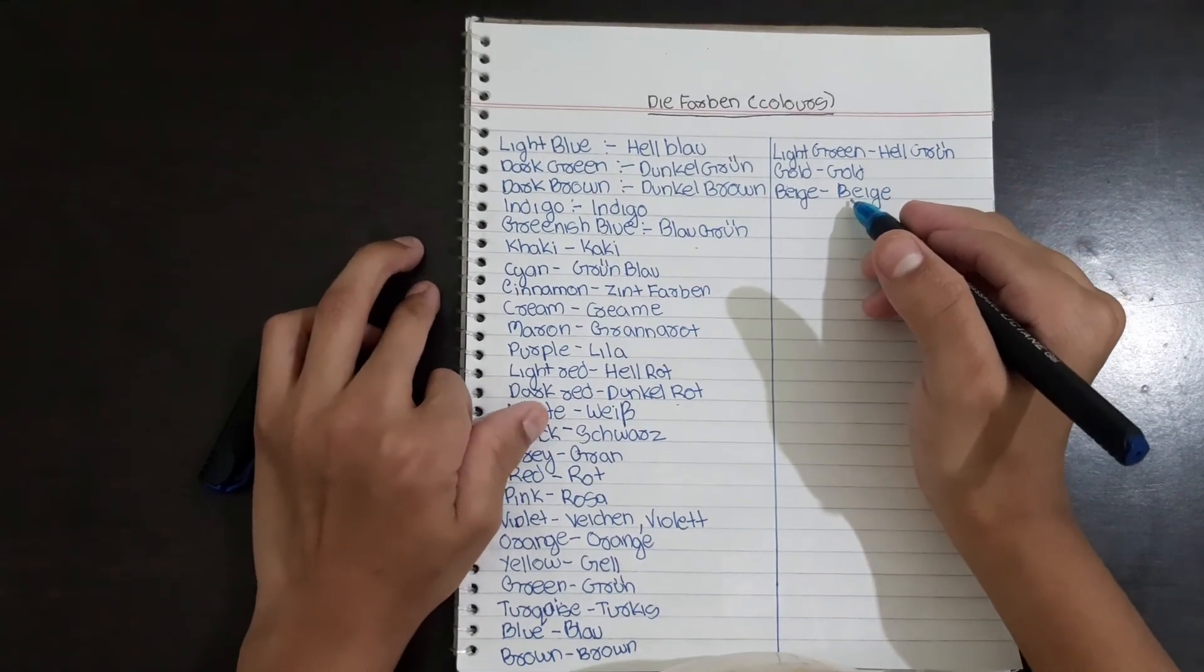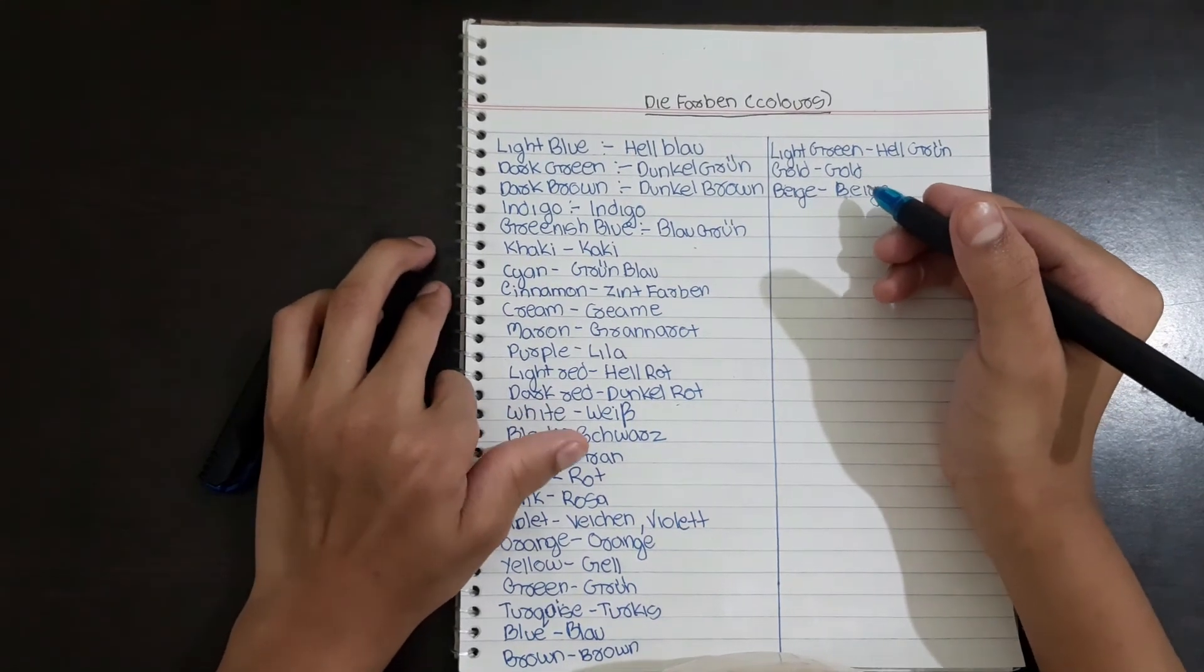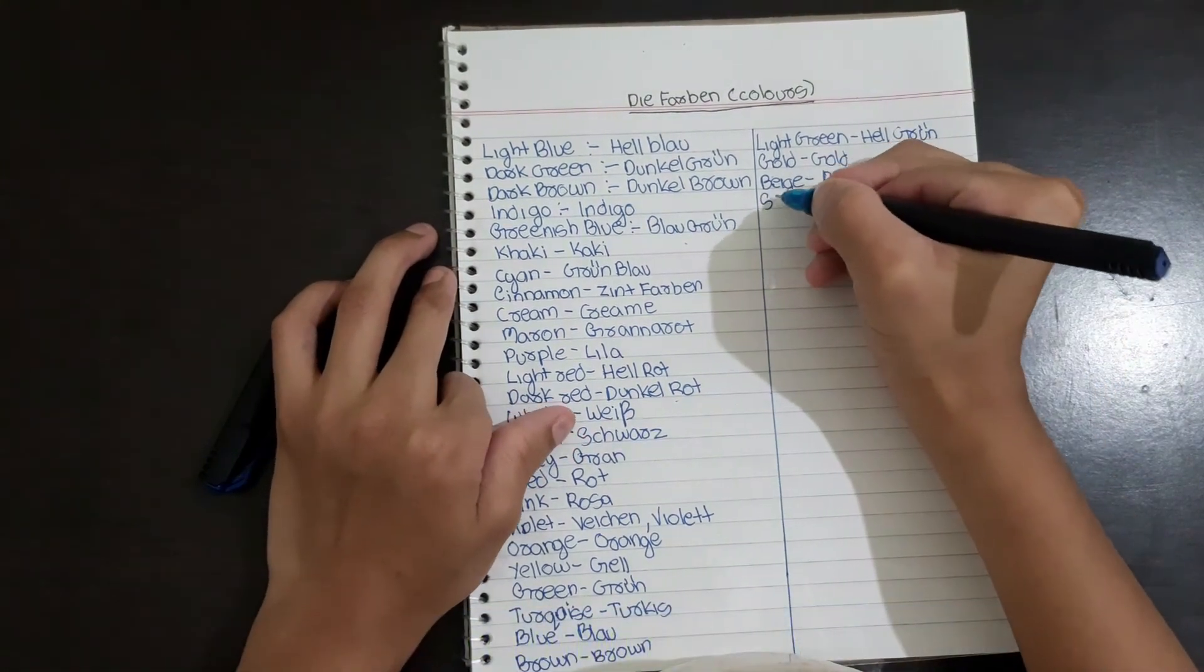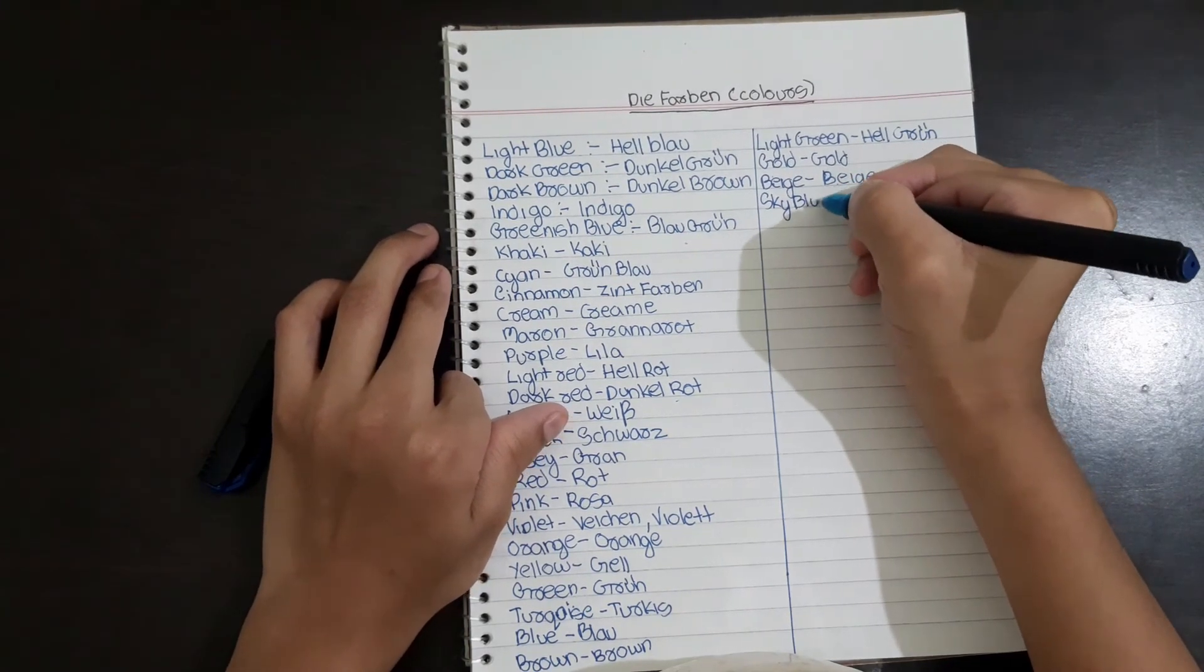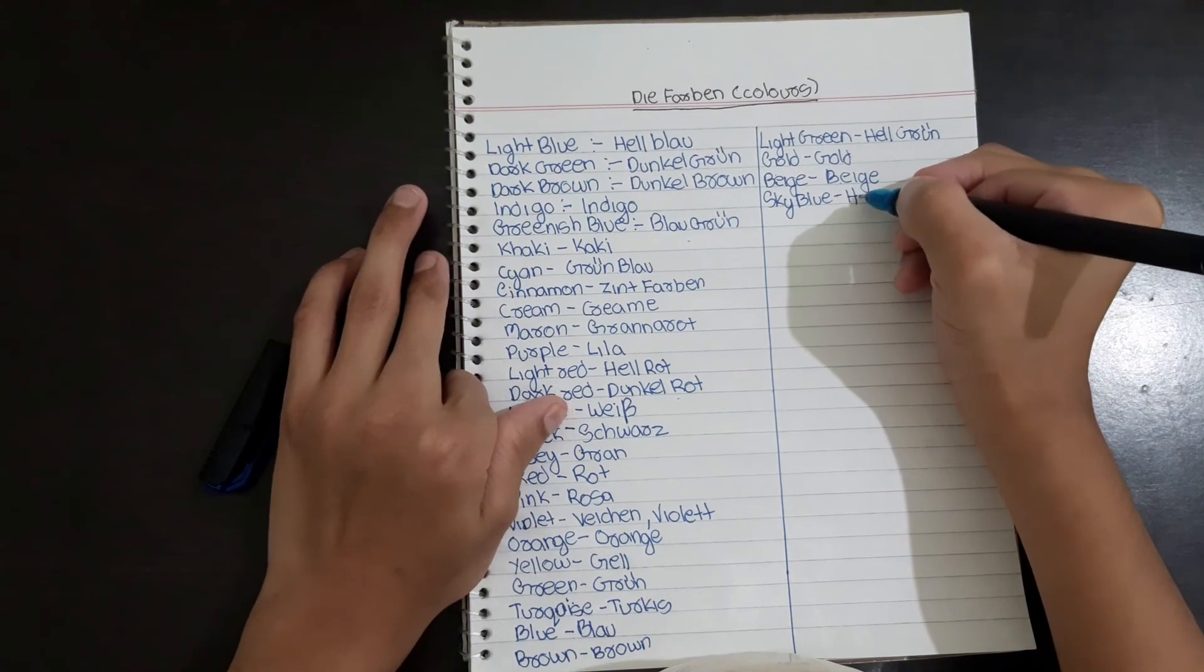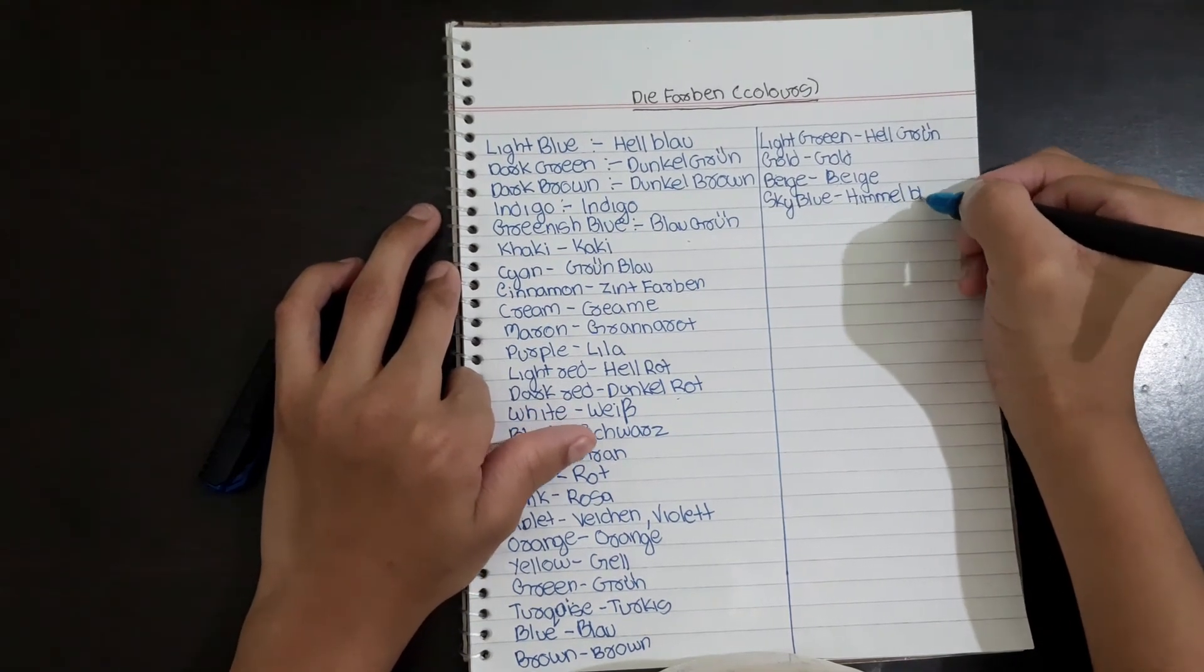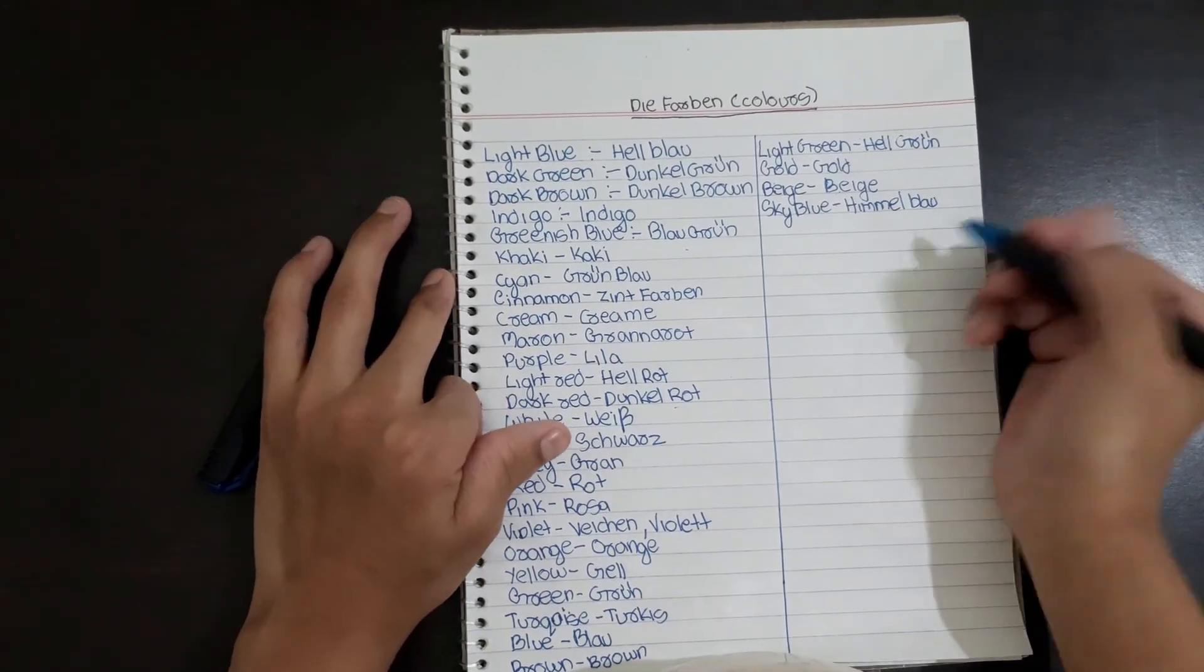Beige. And the last one is sky blue. Himmelblau. Himmel means sky, Blau means blue.